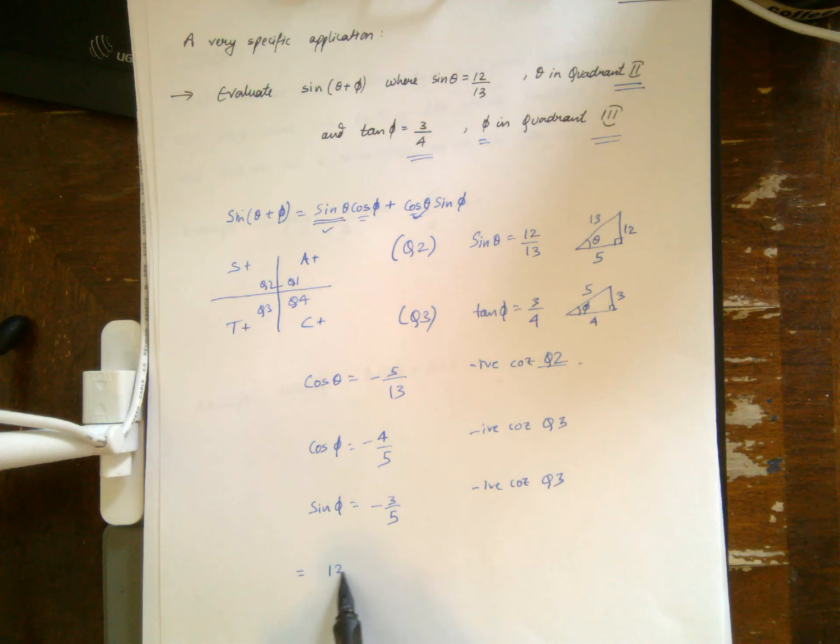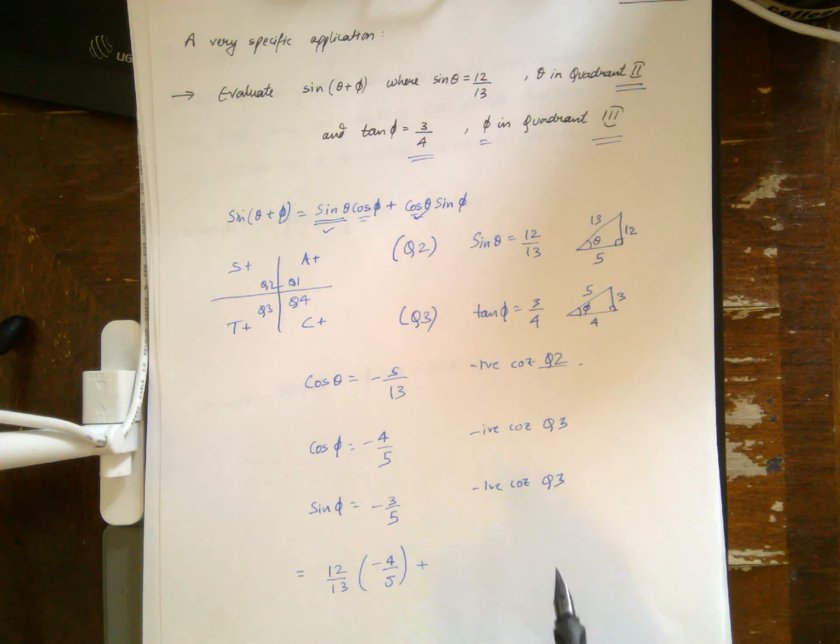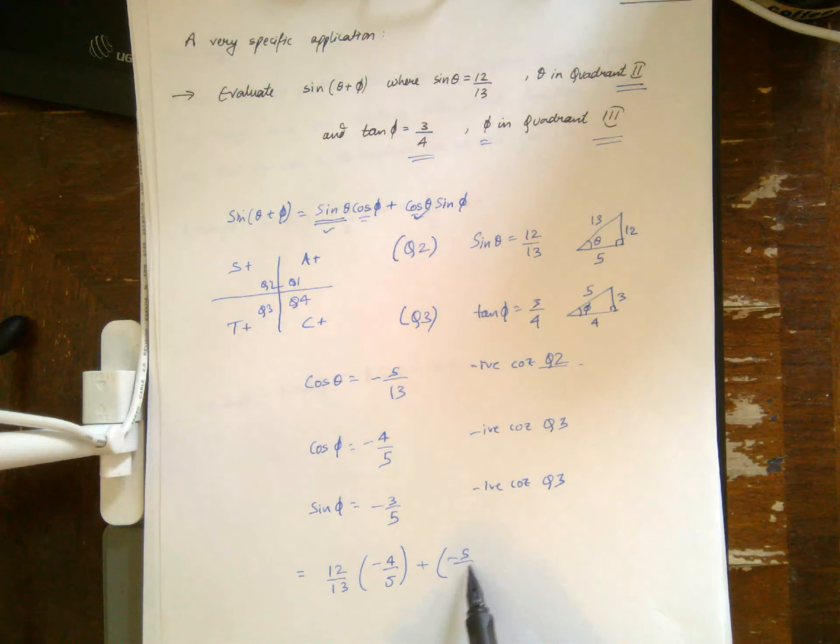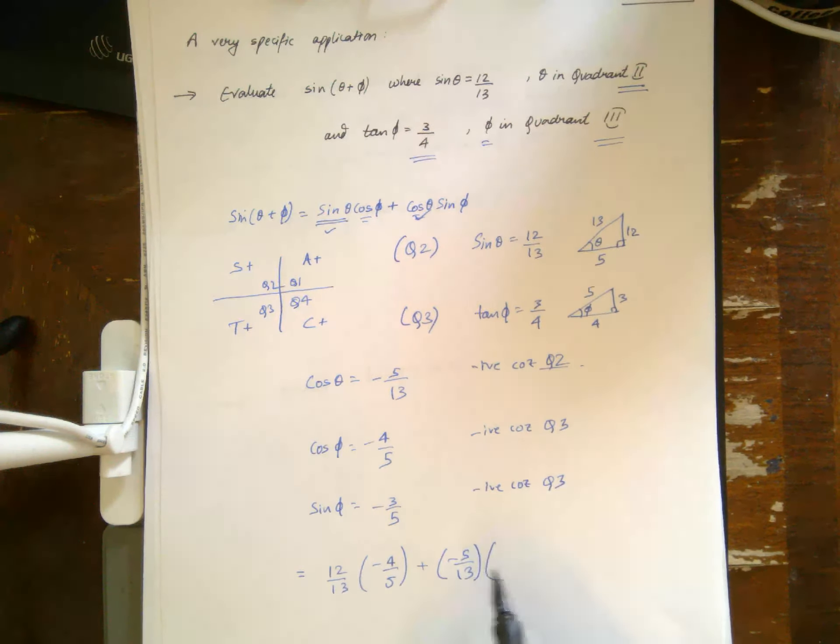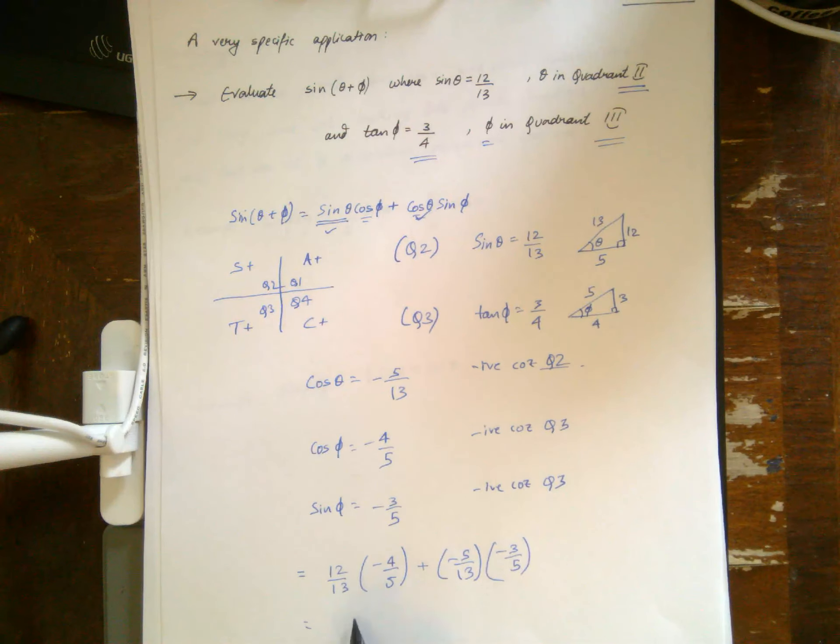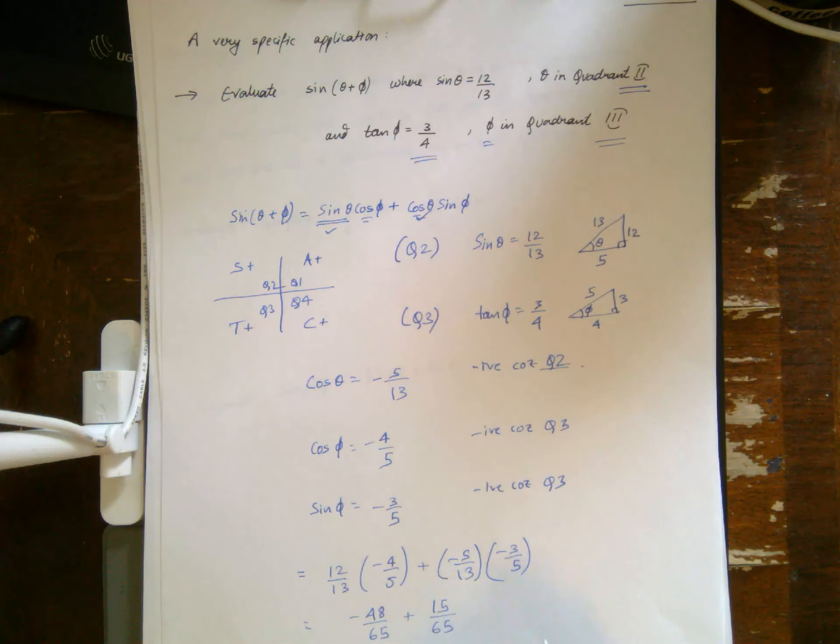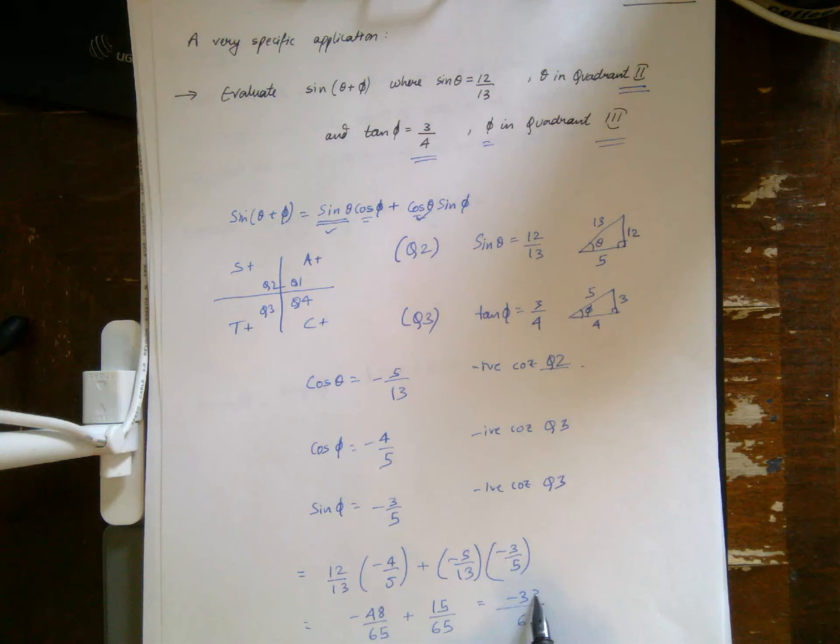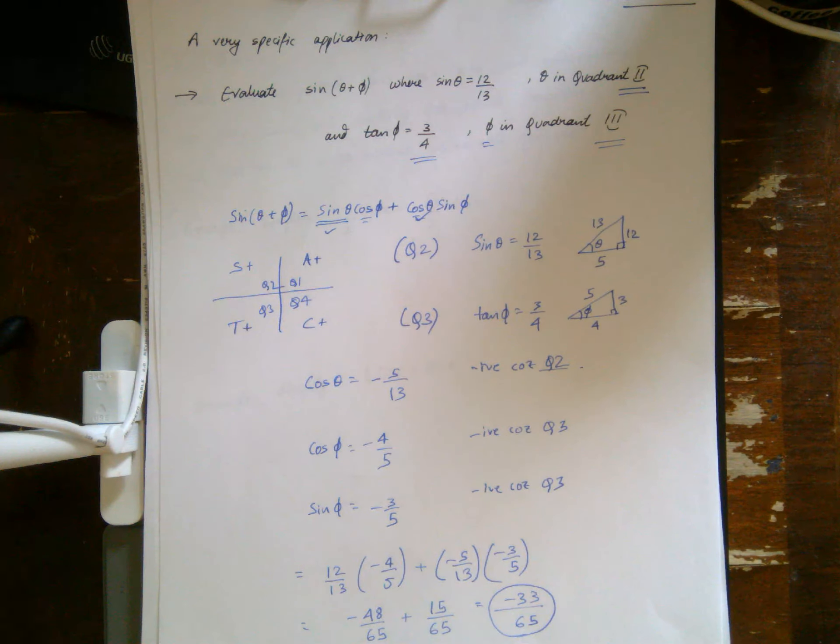So substituting the values, I get sine theta which is 12 over 13, cosine phi negative 4 fifths, plus cosine theta negative 5 over 13, and sine phi negative 3 over 5. So that's negative 48 over 65 plus 15 over 65, which gives me negative 33 over 65.